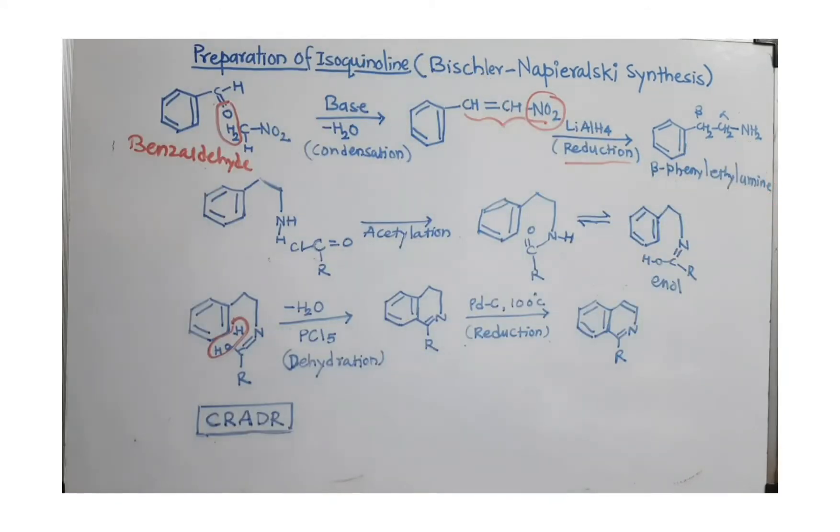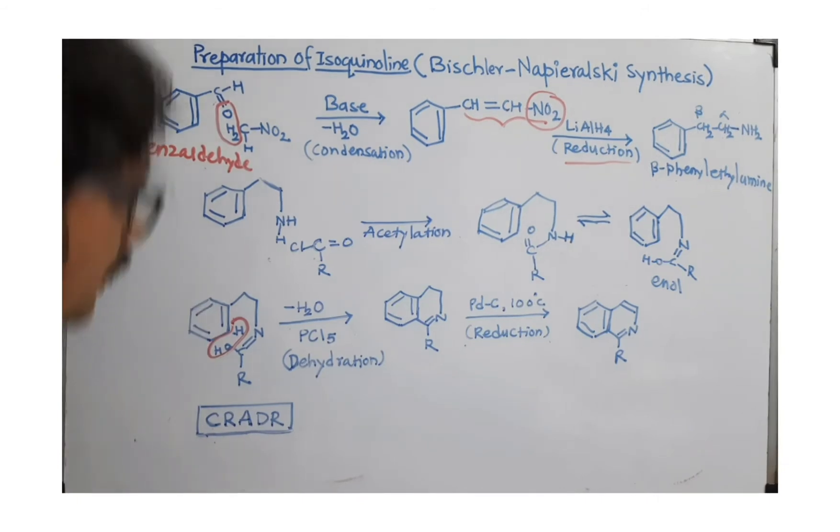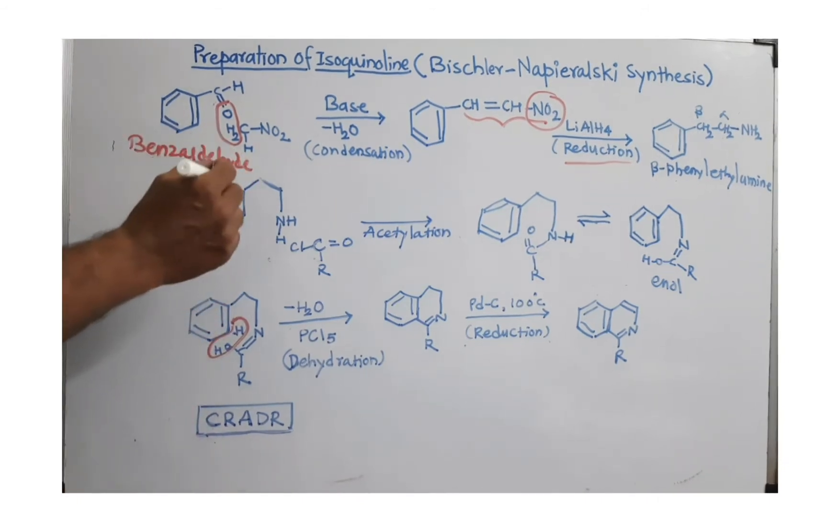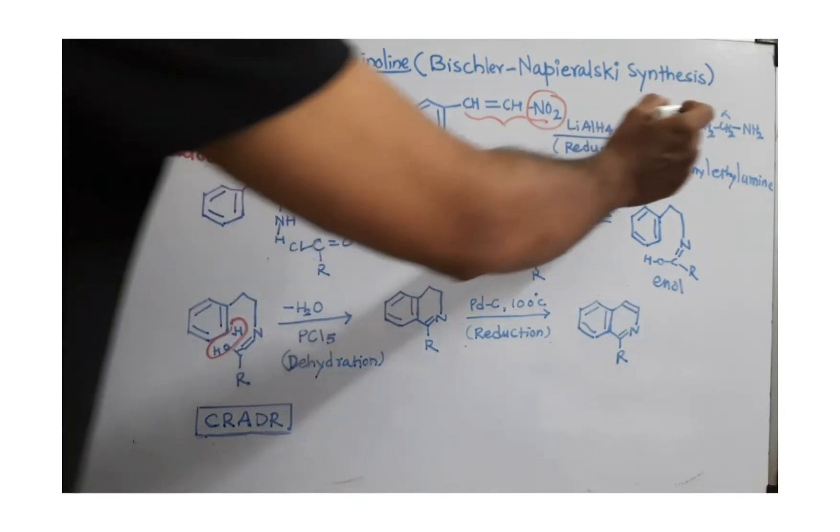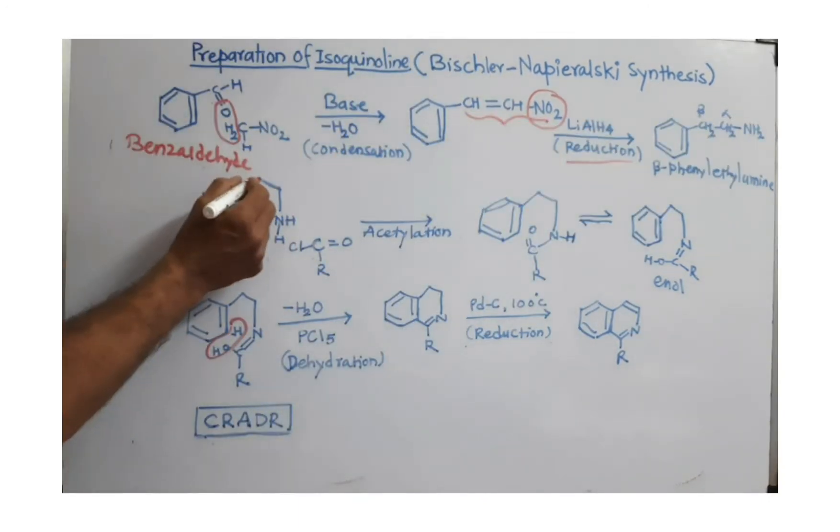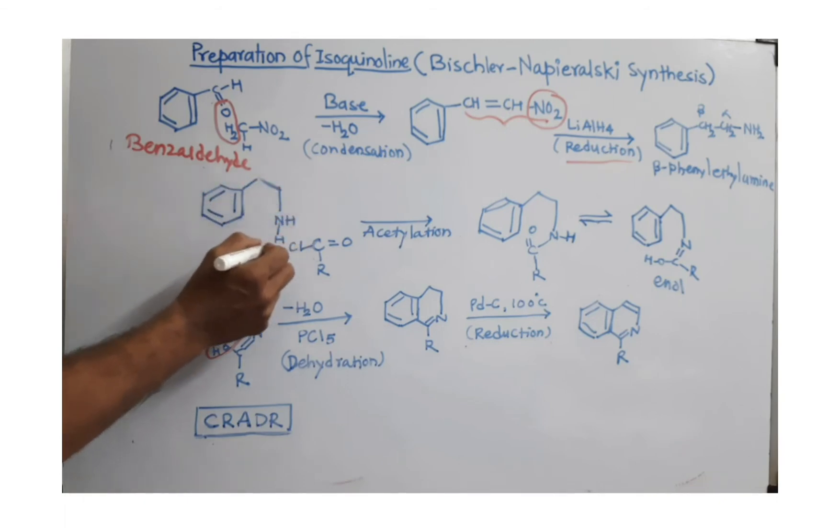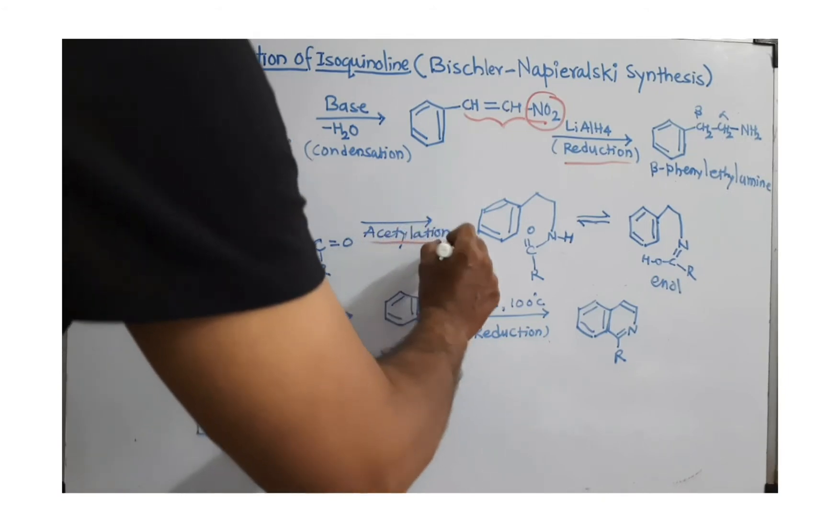Now, this beta-phenyl ethyl amine is taken here. I wrote this time somehow differently because I have to form another ring. So, instead of using CH2, CH2, I use these bonds. And this is CH2, CH2 and this is nothing but the NH2. I remove 1H outside because we are going to perform now acetylation.